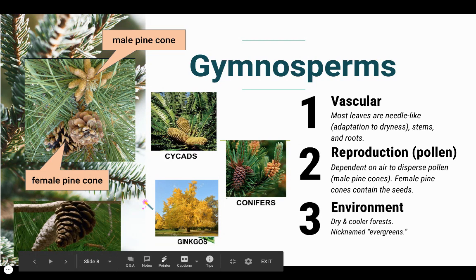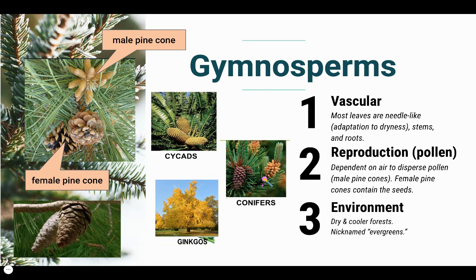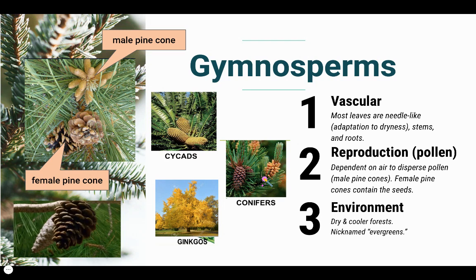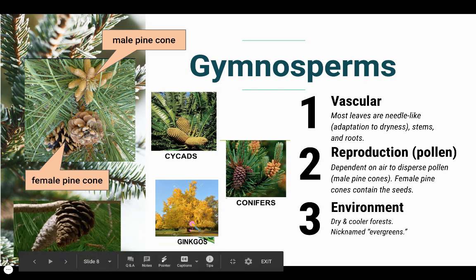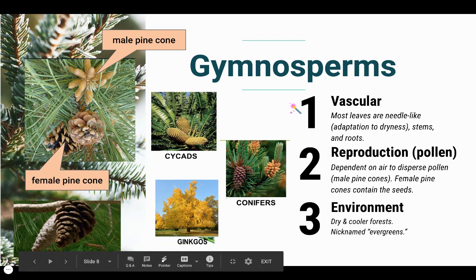Gymnosperms are typically found in dry and cooler forests. In the tundra or taiga you'll find conifers because they do very well in dry and cool environments. They're nicknamed the evergreens because they retain their green color and can photosynthesize year round, though it slows a little in winter. Some gymnosperms don't fit the typical conifer description — like ginkgo trees, which turn a brilliant yellow in fall, and cycads.